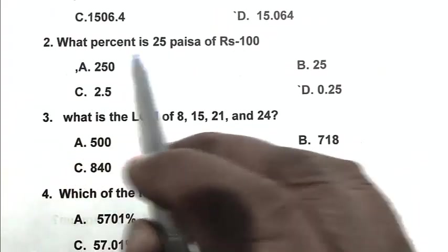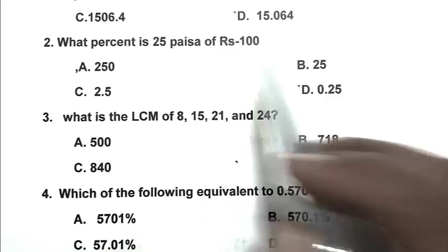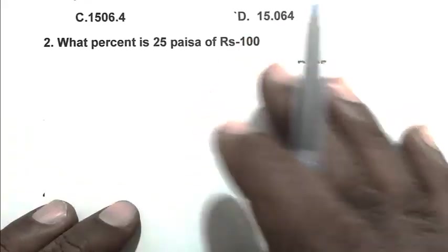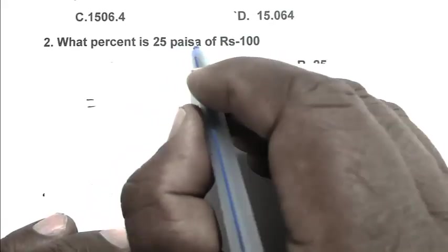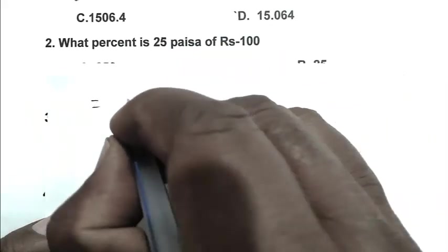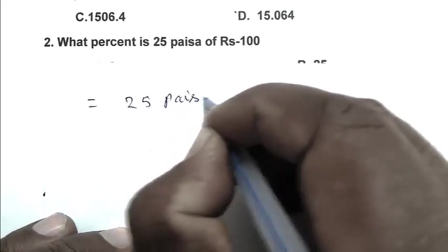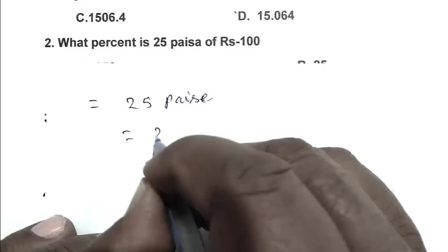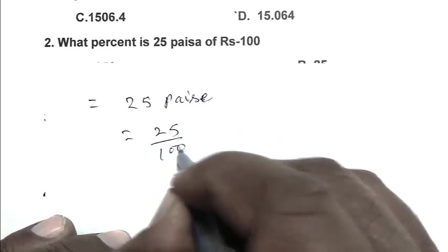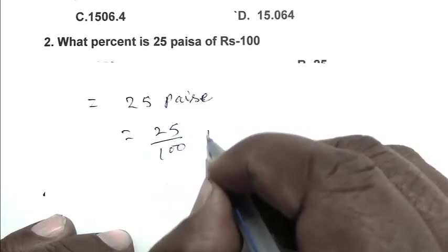Question number 2: What percent is 25 paisa of Rs. 100? So friend, first we convert 25 paisa to rupees. So 25 paisa is 25 upon 100 rupees, which equals 0.25 rupees. Then we calculate: 0.25 divided by 100 multiplied by 100 percent equals 0.25 percent. So D is the right answer.